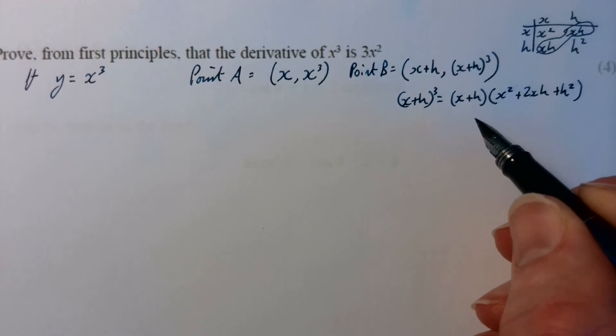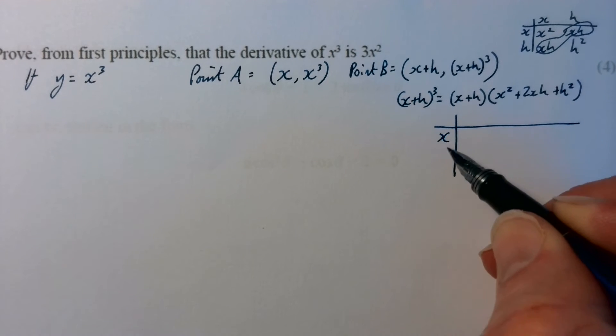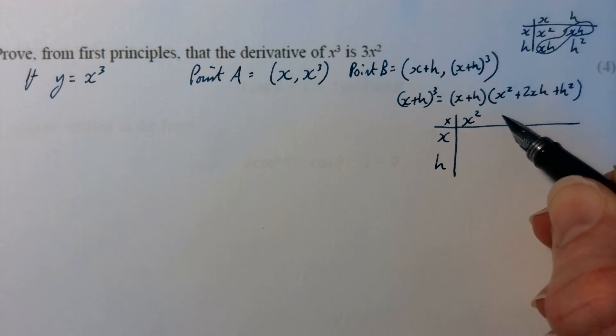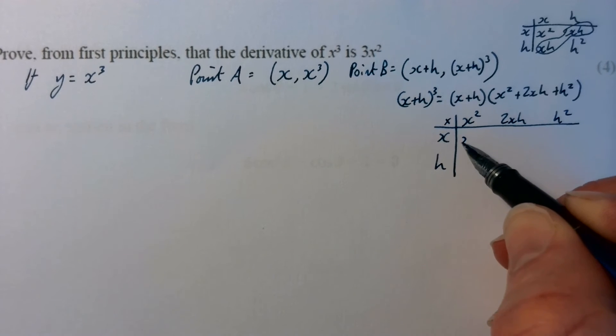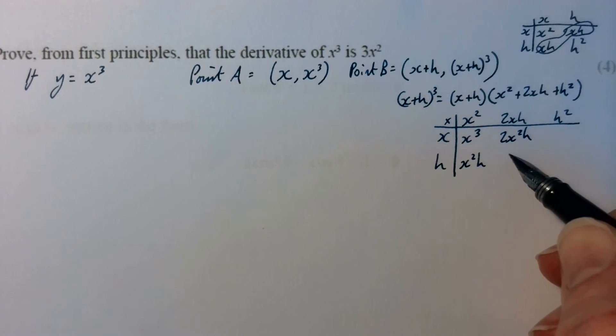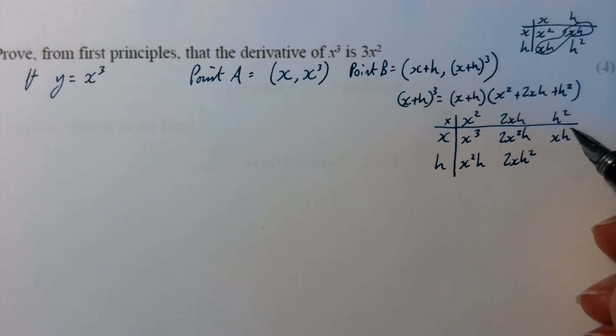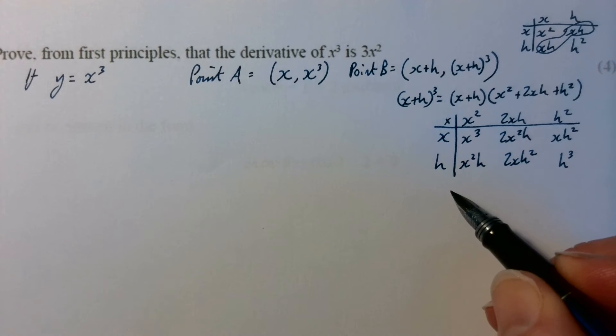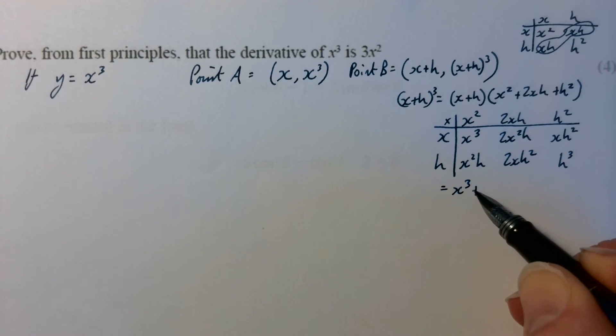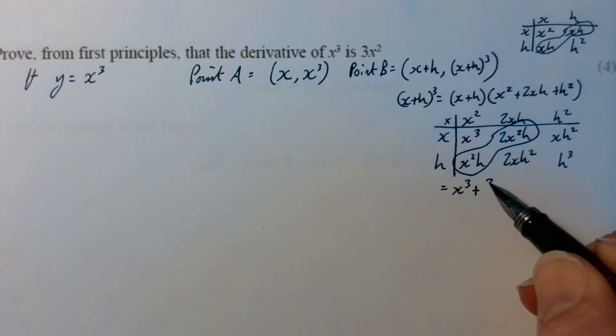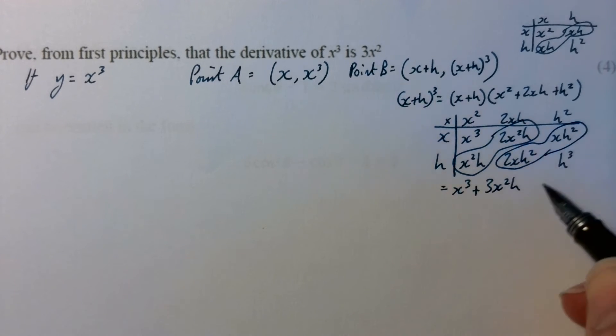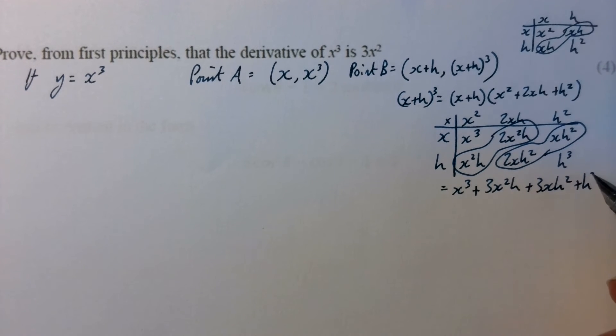So now, if we take another grid and put x and h there, x squared there, 2xh and h squared. x times x squared is x cubed, x squared times h, 2x squared h, 2xh squared, xh squared and h cubed.